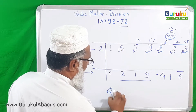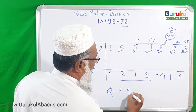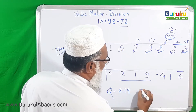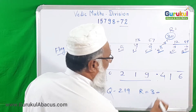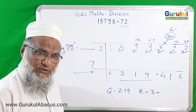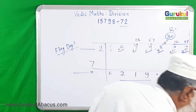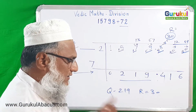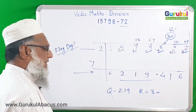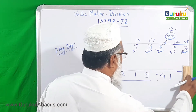So our final answer: the quotient is 219 and the remainder is 30. This is our first example solved. We will now take a second example for more understanding.